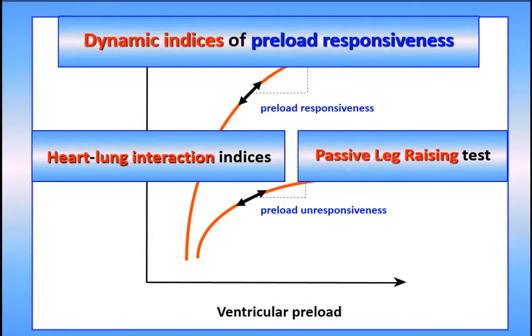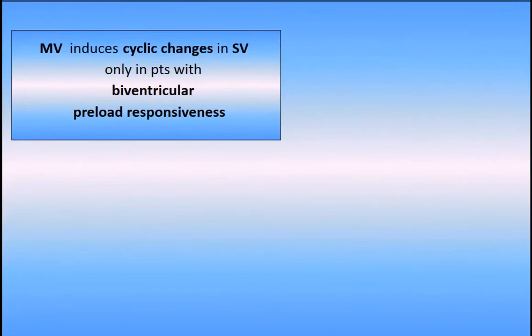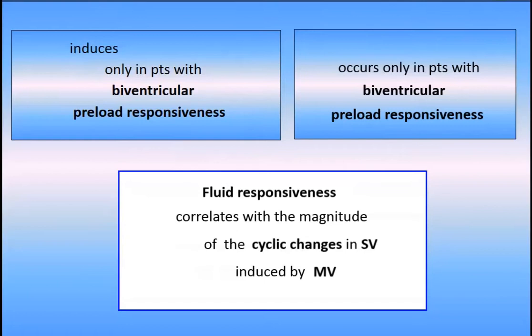We can use either heart-lung interaction indices or passive leg raising test as a volume challenge. Regarding heart-lung interaction indices, we can use the respiratory variation of stroke volume. The idea behind this is that mechanical ventilation induces cyclic changes in stroke volume only in patients with biventricular preload responsiveness. And fluid responsiveness occurs only in patients with biventricular preload responsiveness. Therefore, fluid responsiveness correlates with the magnitude of cyclic changes in stroke volume induced by mechanical ventilation. This is the primary hypothesis.